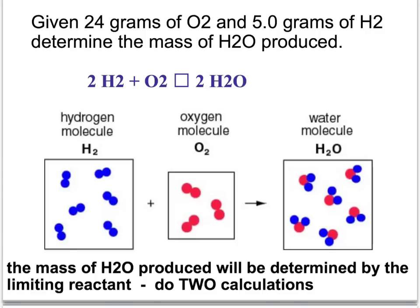We're going to use the same problem we had yesterday. We had 24 grams of oxygen combined with five grams of hydrogen. Now notice the 24 is a much bigger number than the oxygen, but we know hydrogen weighs much less. Oxygen has a mass of 32 grams per mole. Hydrogen is only two grams per mole.